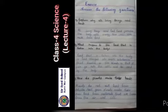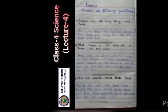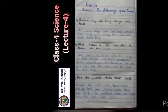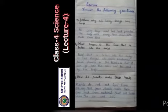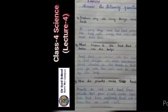C. How do plants make their food? Plants do not eat food from outside. Most green plants make their own food from materials that are taken from the air and soil.